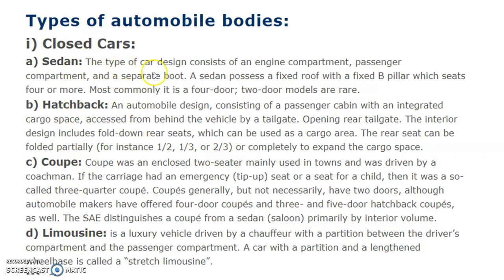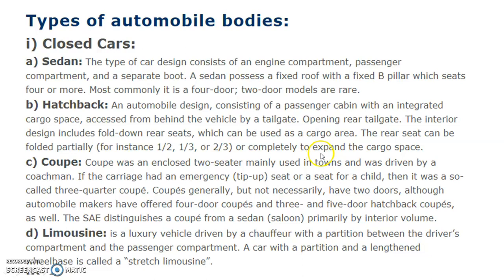Sedan: This type of car design consists of an engine compartment, passenger compartment and a separate boot. A sedan possesses a fixed roof with a fixed B-pillar and seats four or more passengers. Most commonly it is four-door; two-door models are rare. Hatchback: An automobile design consisting of a passenger cabin with an integrated cargo space accessed from behind the vehicle by a tailgate. The interior design includes fold-down rear seats which can be used as a cargo area; the rear seat can be folded partially or completely to expand cargo space.